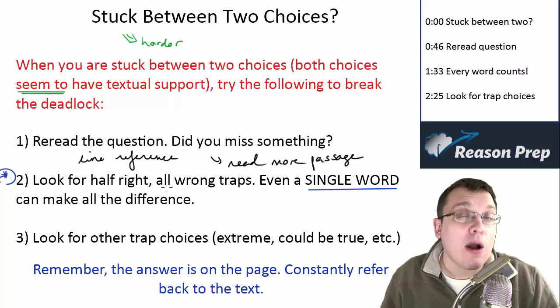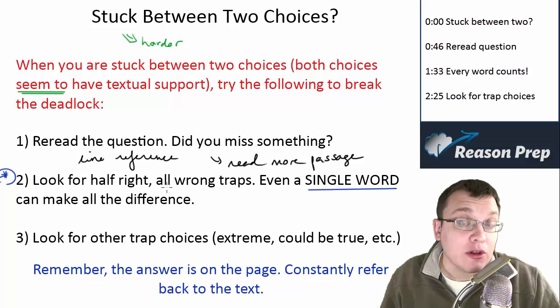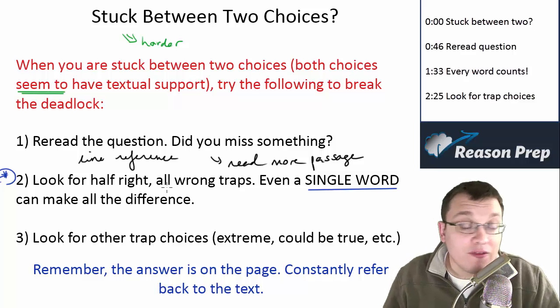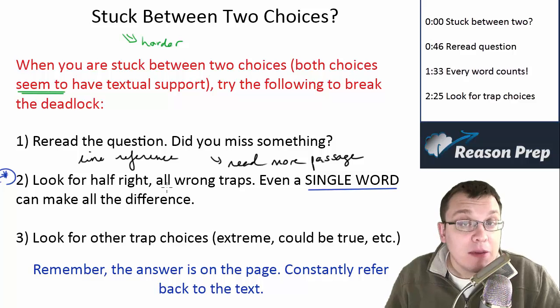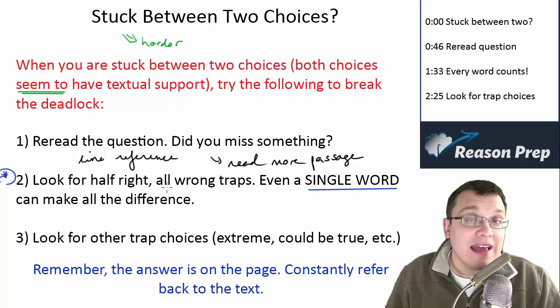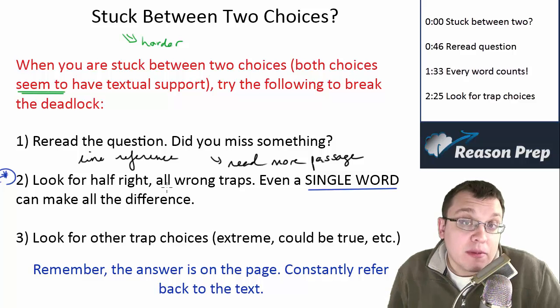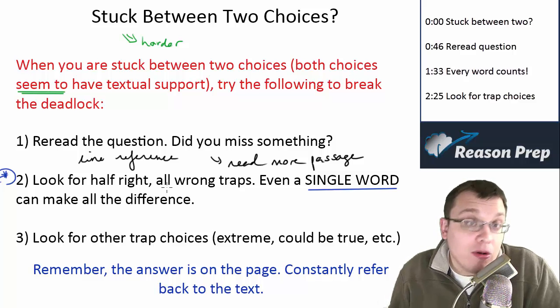And this is typically how they're going to make two choices seem similar or seem both right. You know, 90% of the wrong answer choice will be correct, but it's that last bit that doesn't fit with the passage that makes it wrong. And that's what makes the choices seem so similar because they both seem more or less correct, and they are both more or less correct.